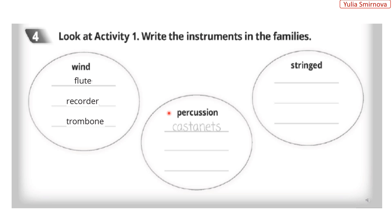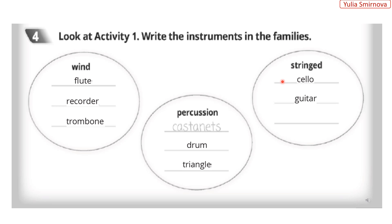Percussion instruments are: castanets, drum, and triangle. Stringed instruments are: cello – целло, guitar – гітара, and piano – піаніно. Струнні інструменти є: віолончель, гітара та піаніно.